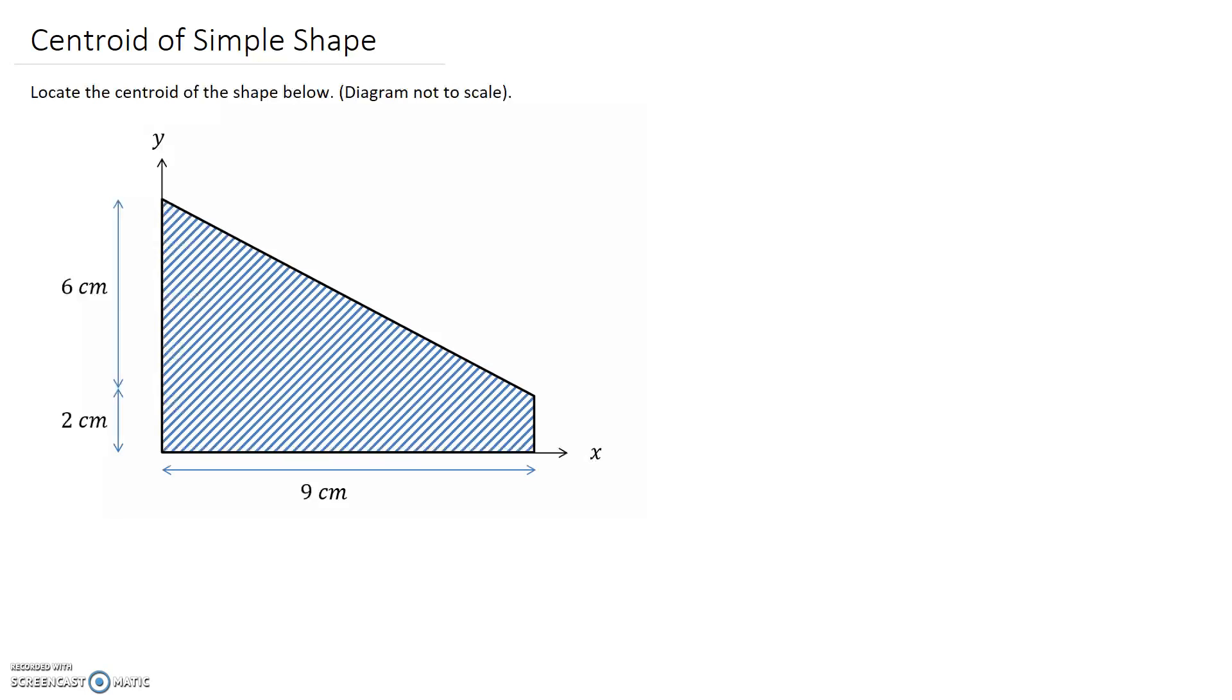At the moment it's a trapezoid, but if I drop a line that goes straight through here, what I've done is divided it into a rectangle and a triangle, which are super easy shapes to deal with in terms of the centroid.